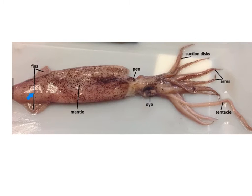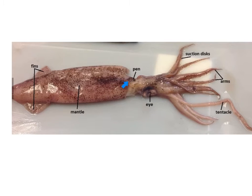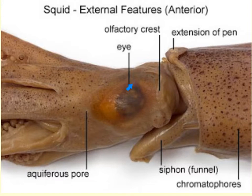The trunk area consists of the large mantle, a unique structure characteristic of molluscs. Looking inside, the mantle cavity houses the gills and the visceral mass. Anteriorly, we can see the beginning of the internal shell called the pen. This structure runs the length of the body and can be pulled out to examine what the internal pen looks like. We can also see a close-up of the eyes, the siphon, and the extension of the pen.